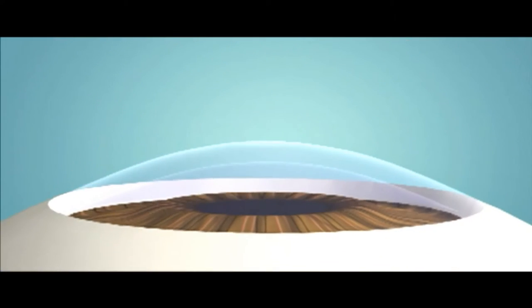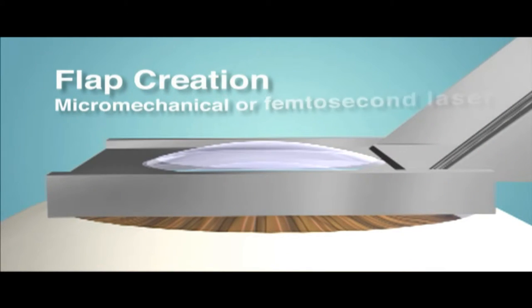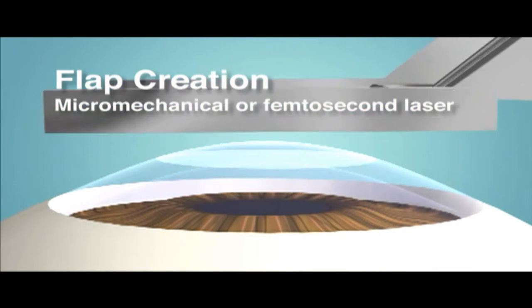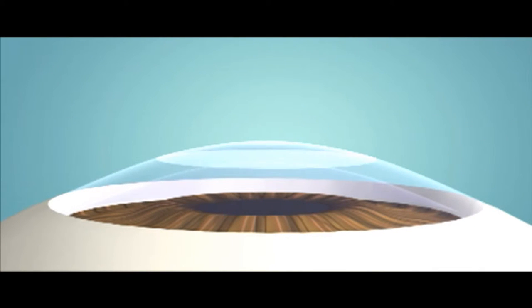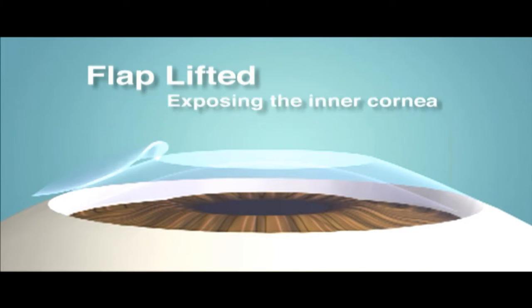With LASIK, a small flap is created in the front portion of the cornea with either a micro-mechanical device or a special laser system called femtosecond laser. The flap is then lifted and an excimer laser controlled by a computer is applied on the remaining cornea to sculpt a new shape.